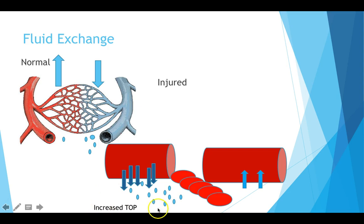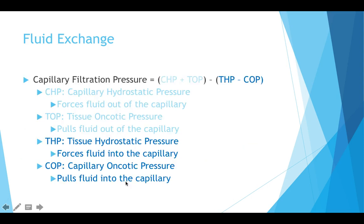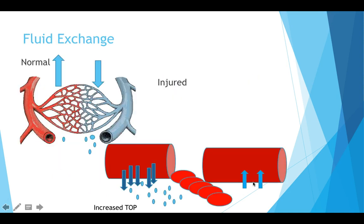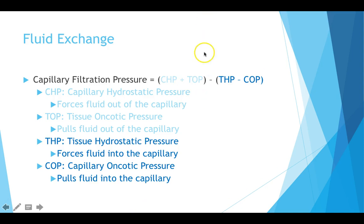What we dramatically see increase with injury is the tissue oncotic pressure (TOP). If we get an increase in tissue oncotic pressure and nothing else really changes, that means net out — less fluid in — and that means swelling. However, the limb's hydrostatic pressure can be altered based on changes in the position of the limb. So if the TOP is significantly higher, we can change the tissue's hydrostatic pressure by elevating the limb, and that's one way we can start to fight this exchange.